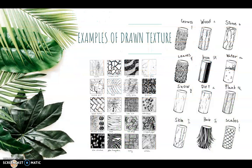Here is our final slide — an example of all different textures drawn on paper. You'll see all different examples of textures you could find in nature, and you can use these to help you come up with your own ways of creating implied texture. For example, the grass looks like short little V's, sharp at the edge with a little bit of shading at the tip. There are also labels underneath each square that give you an idea of the texture being shown.